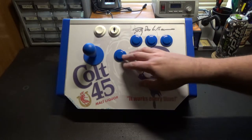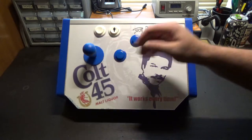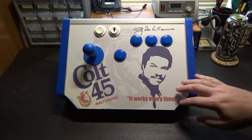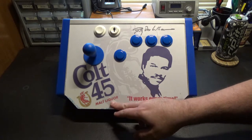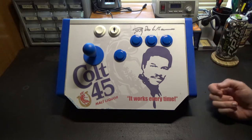So what this is is this Neo Geo controller, fully functional, although for reasons we'll get into, it's probably not going to be the ideal stick to use. But it's done up in the Colt 45 livery from the Billy Dee Williams era of Colt 45.